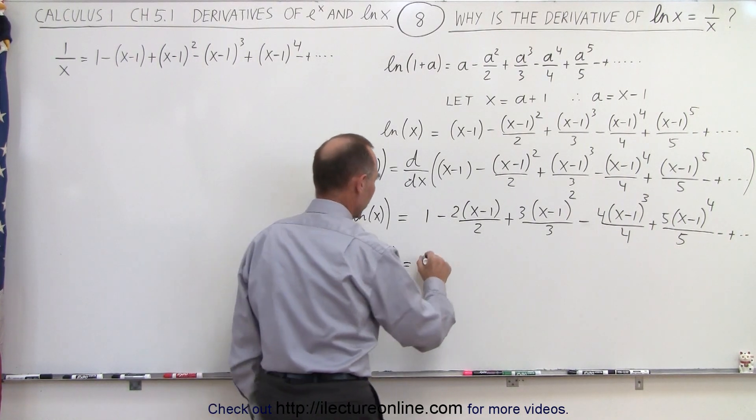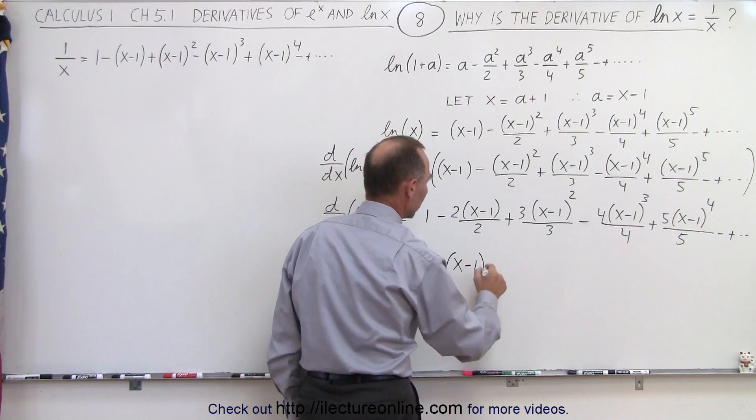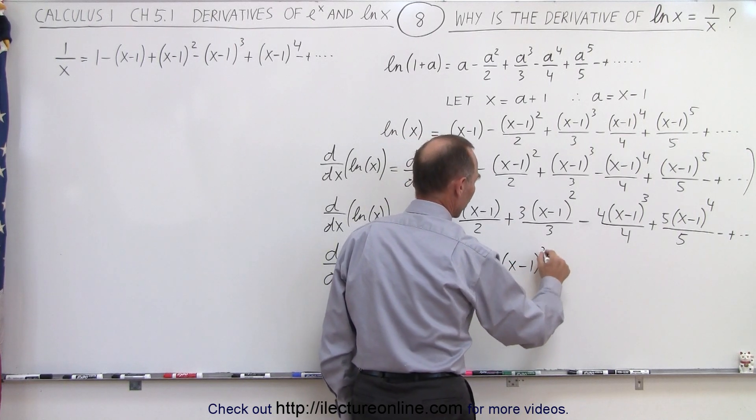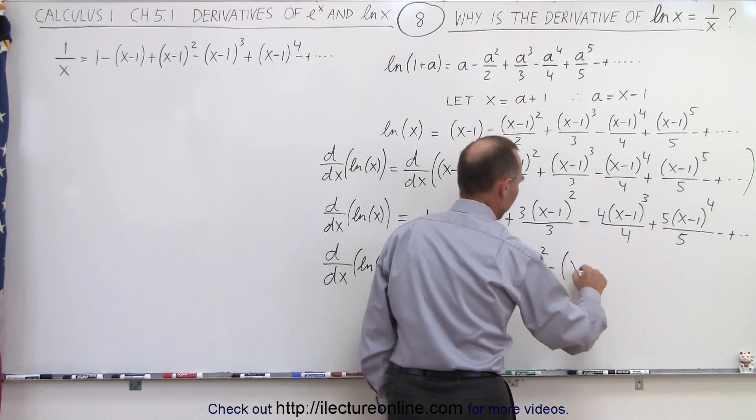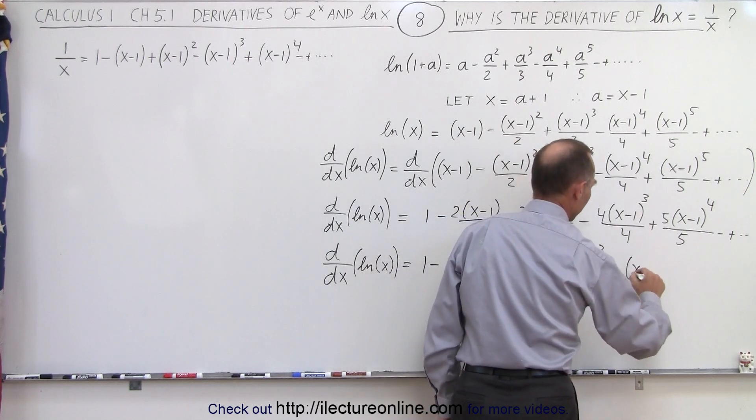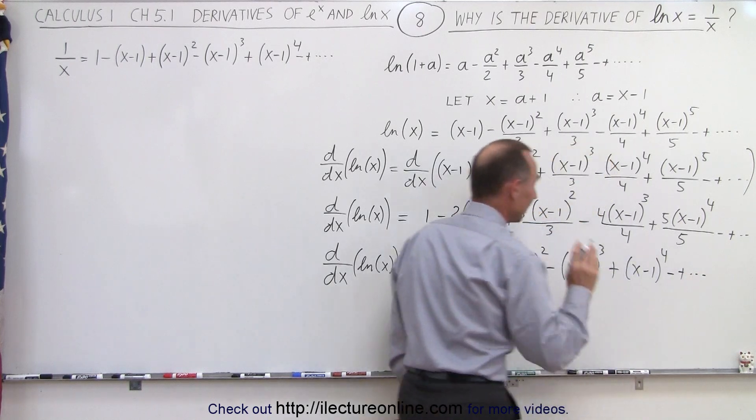Is equal to 1 minus the 2s cancel out, we end up with x minus 1, and here the 3s cancel out, plus x minus 1 squared, minus x minus 1 cubed, plus x minus 1 to the 4th power, minus, plus, and so forth.